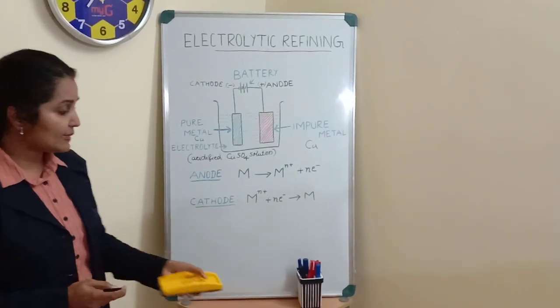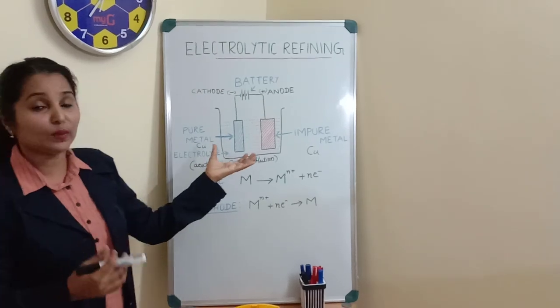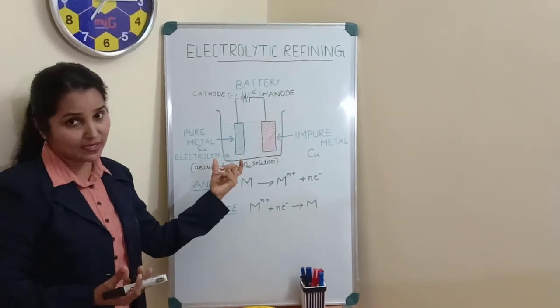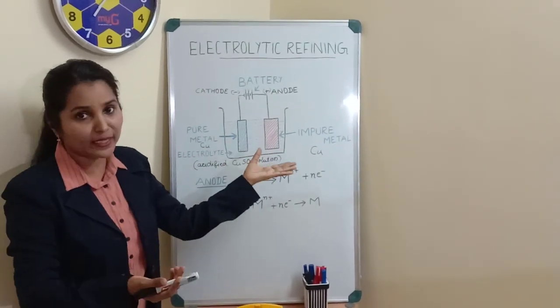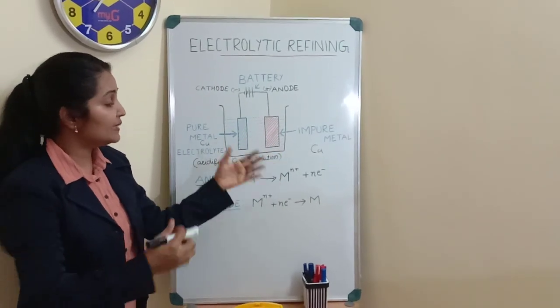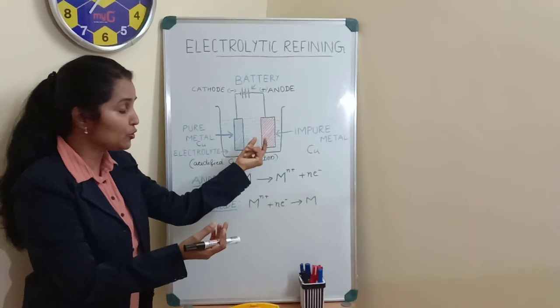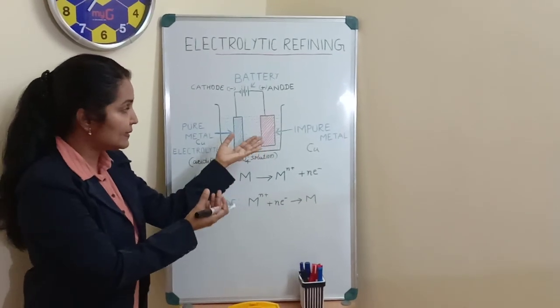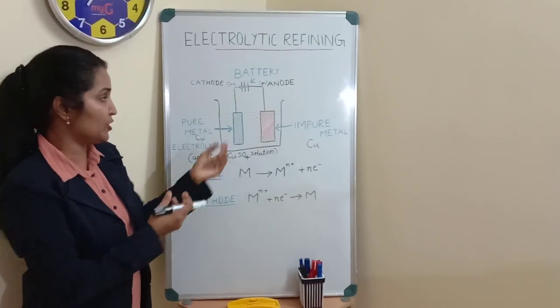When electricity passes, the electrolyte dissociates to form Cu²⁺ cations and SO₄²⁻ ions. At the anode, oxidation occurs - the anode releases electrons to form Cu²⁺ ions which get dissolved and come into the solution.